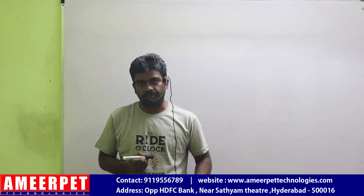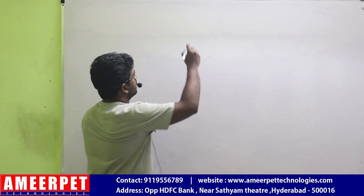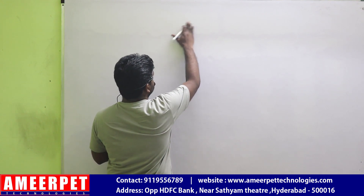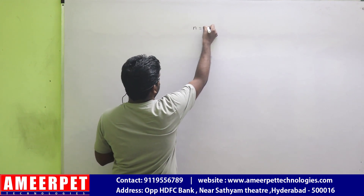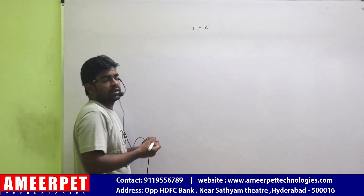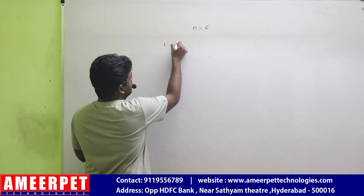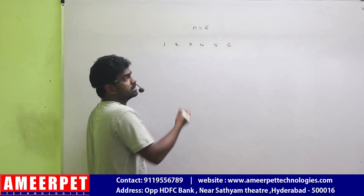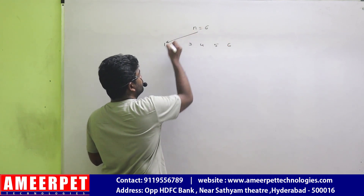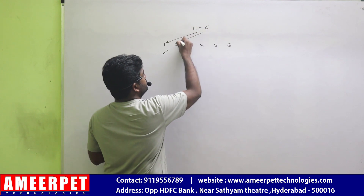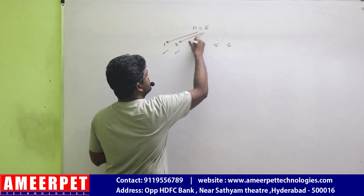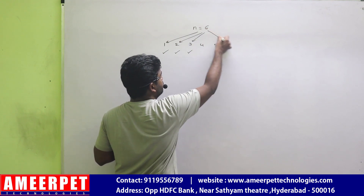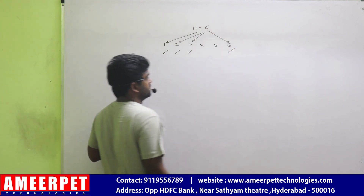Factors are also called divisibles. Suppose I am taking the number 6. For 6, how many divisibles are there? How many factors are there? 6 is divisible by 1, 6 is divisible by 2, 6 is divisible by 3, it is not divisible by 4, not divisible by 5, but it is divisible by 6.